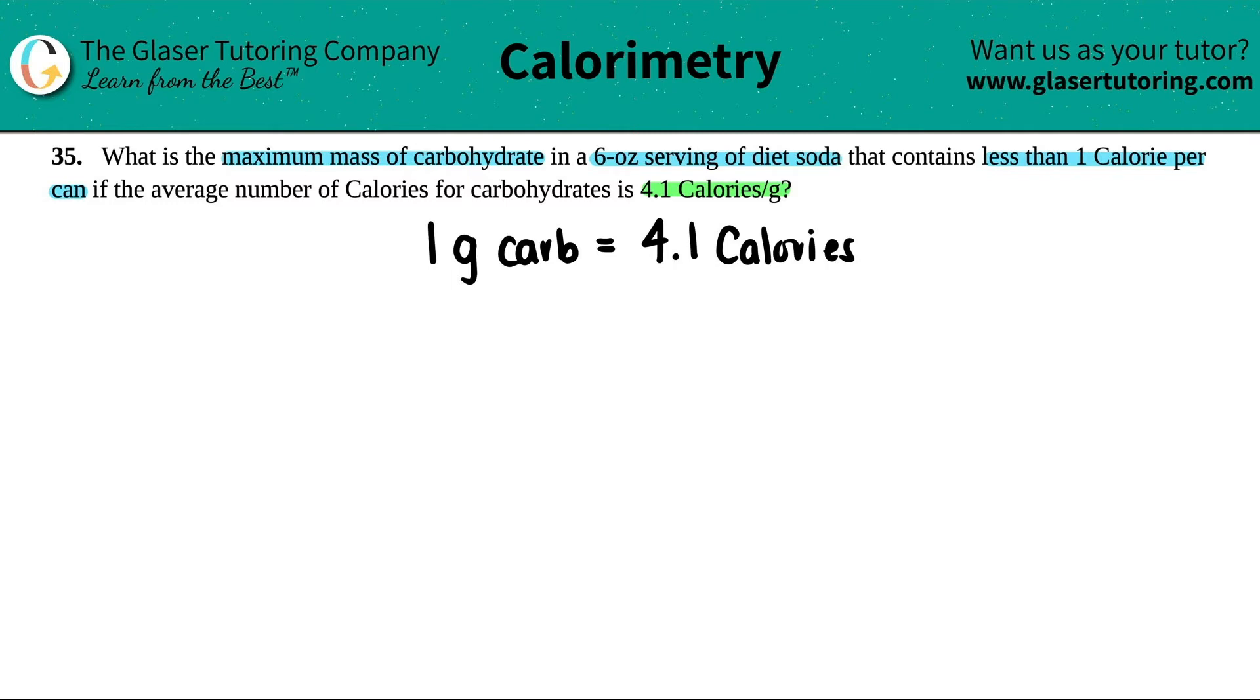Now here we're seeing what's the mass, so how many grams of carbs is there in a can of diet soda that contains less than one calorie per can. Now we have to assume here that they said six ounce serving, I'm going to assume that this six ounce serving is one can. Okay, now the whole can has less than one calorie.